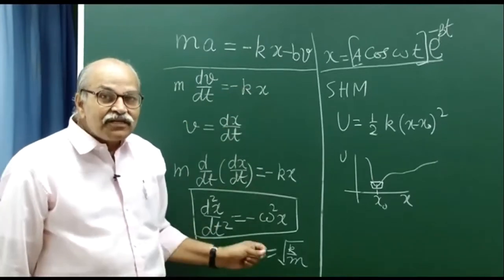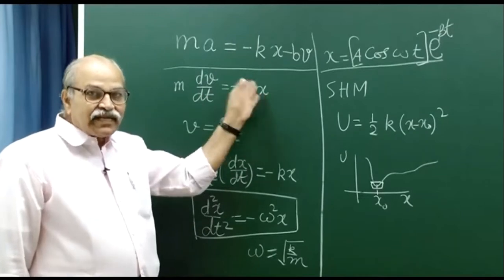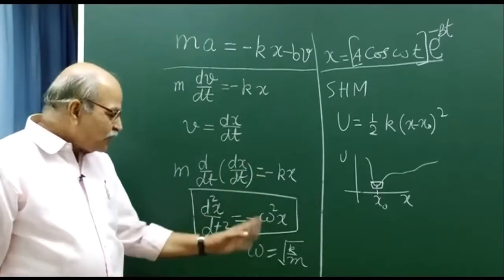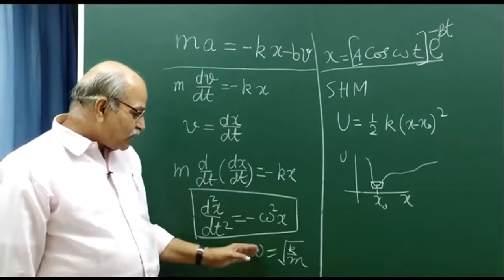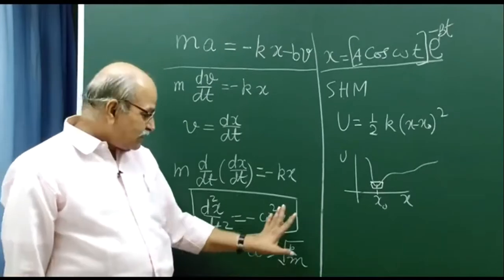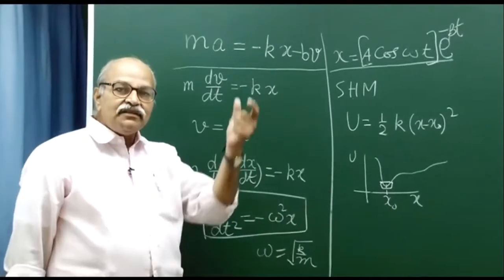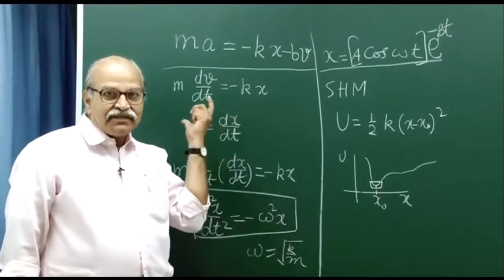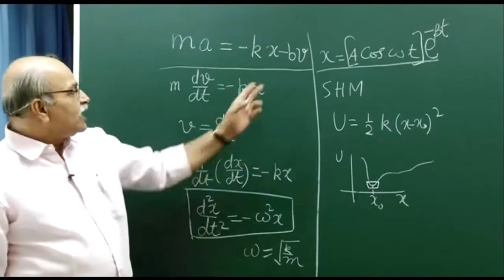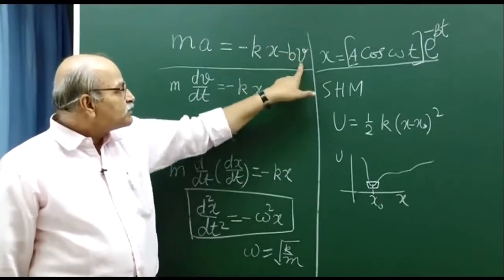We call it the natural frequency of the system — if this system includes the object and the restoring force, that decides the frequency at which it will oscillate. This omega is called angular frequency; your frequency will be omega divided by 2 pi. Then we discussed that together with the restoring force, if you have a damping force — a dissipative force which consumes energy — then for many cases this damping force is proportional to the velocity.